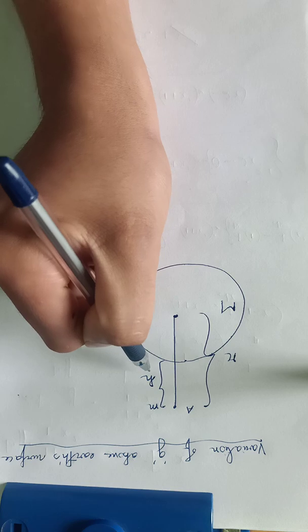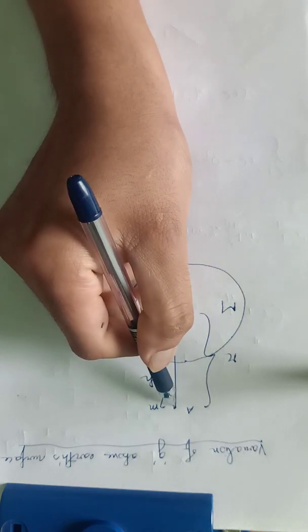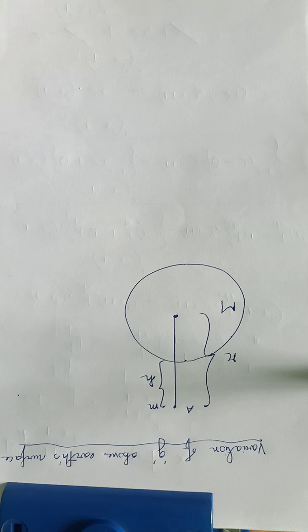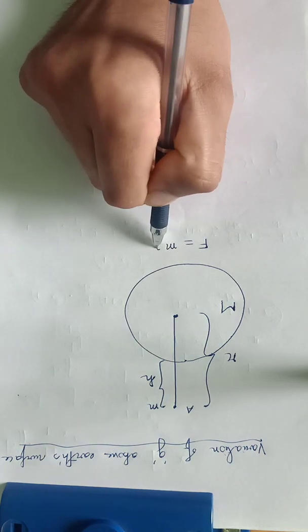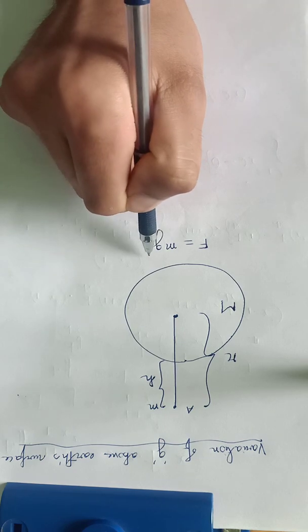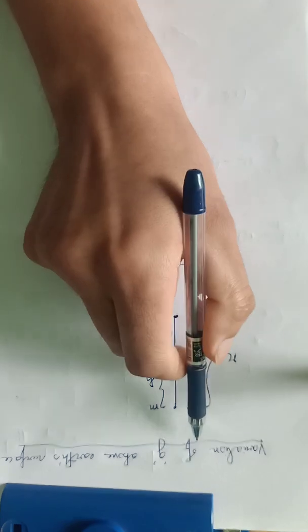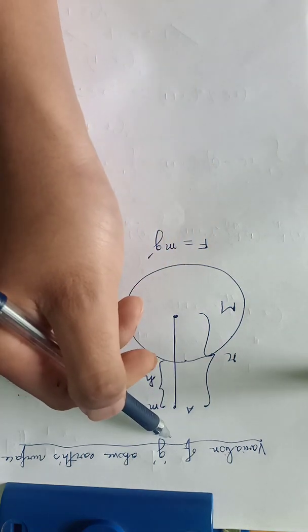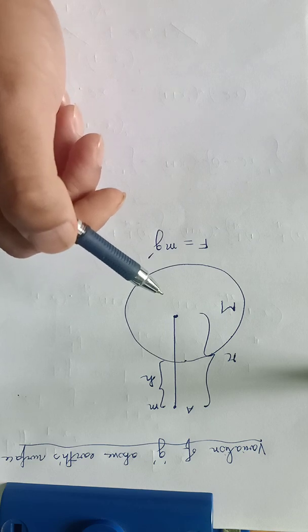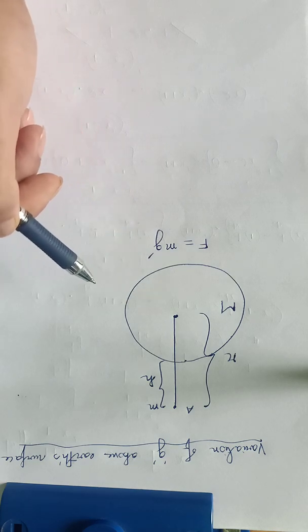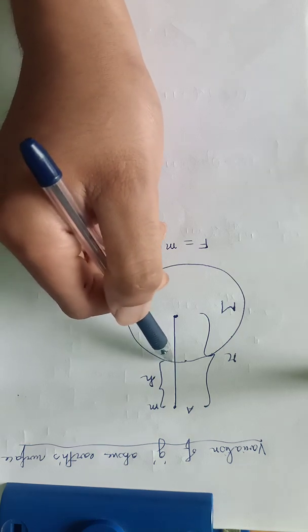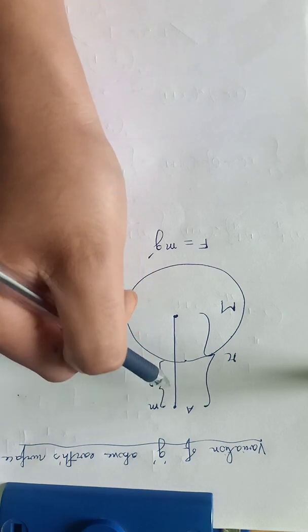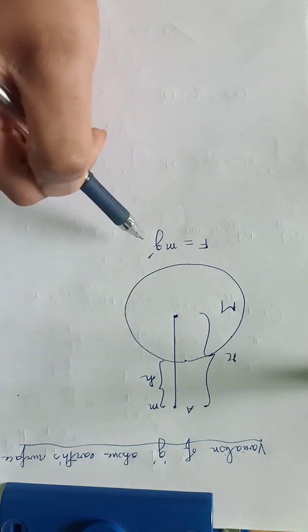Now we know that the Earth is attracting this object towards its center with some force, and that force we call mg'. So F equals mg'. Here, instead of g we write g dash because acceleration due to gravity g is taken on the surface of the Earth. Above or below the Earth's surface we consider it to be g dash, because the acceleration due to gravity on the Earth's surface is different from any point above or below the Earth's surface.